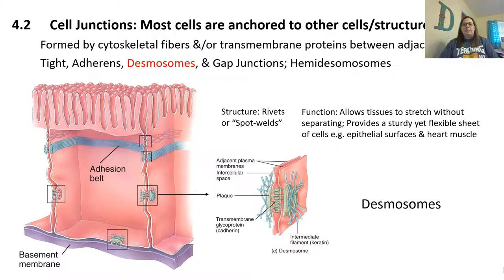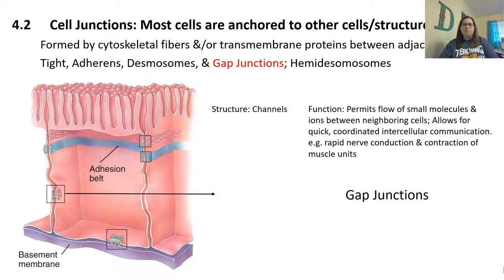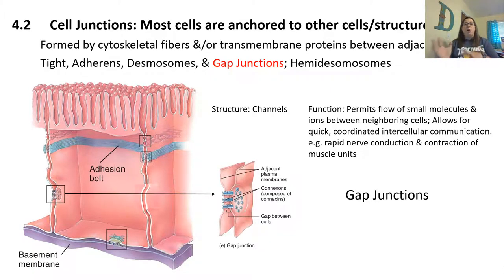Desmosomes have a rivet or welded-together structure that allows tissues to stretch without separating, providing a sturdy flexible sheet. These can be present in epithelial tissues and heart muscles, similar to adherens junctions. Gap junctions act as channels between two cells, helping the flow of smaller molecules from one cell to the next. This allows for quick communication and coordinates cell movements — seen in nerve impulses and muscles so that they contract together.